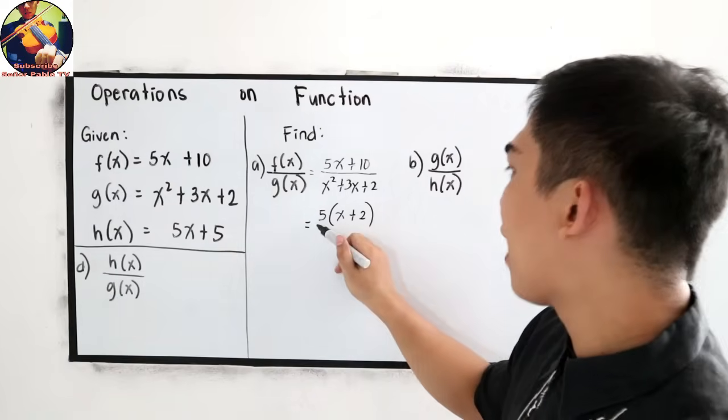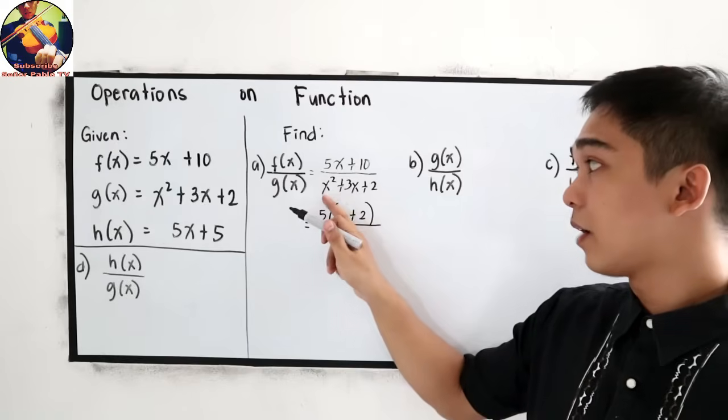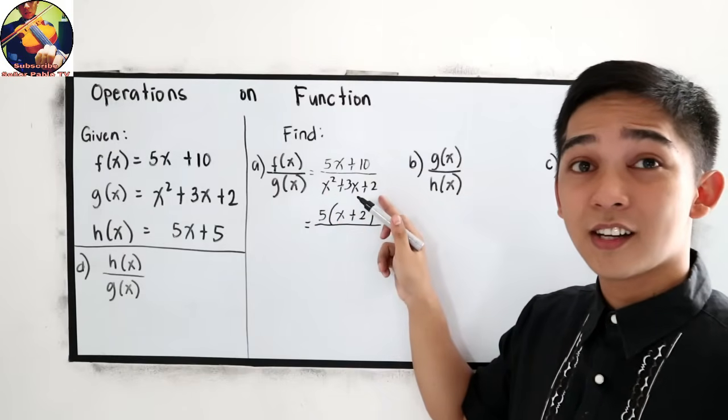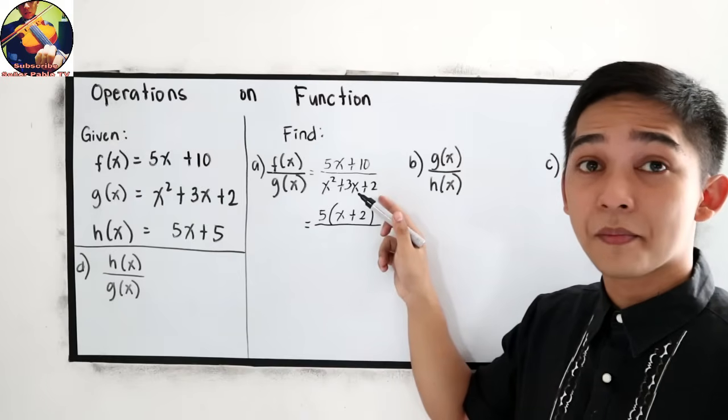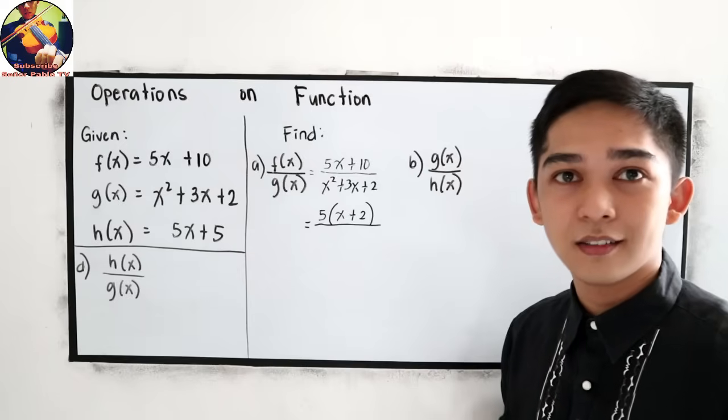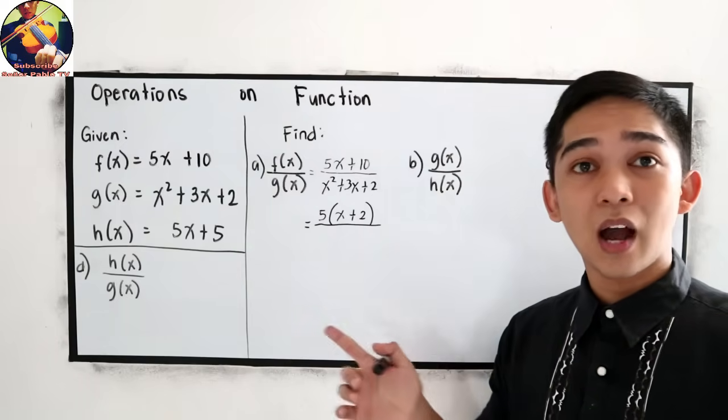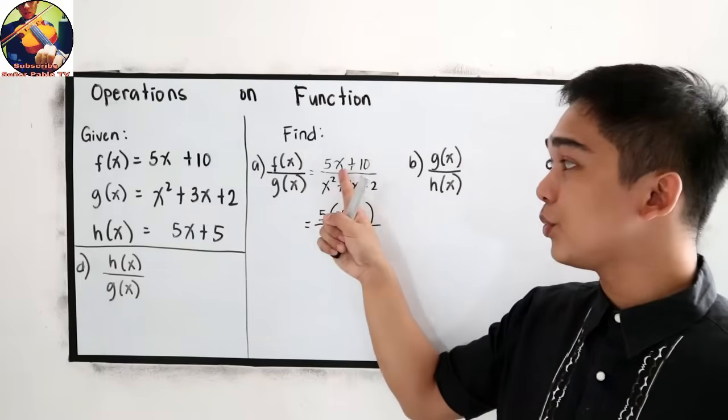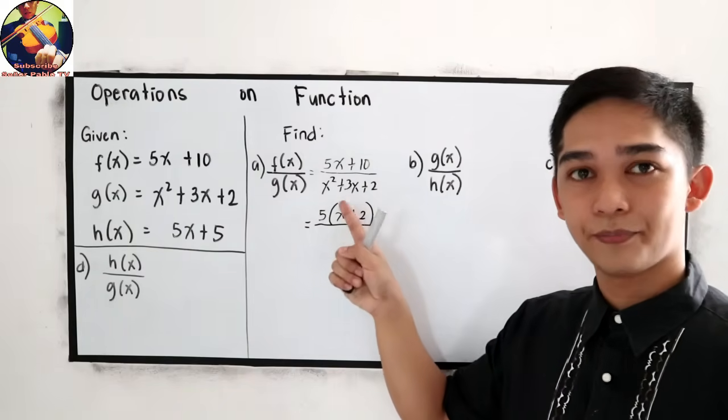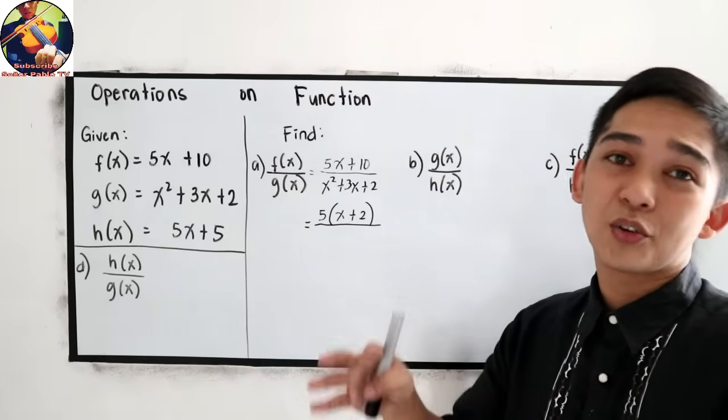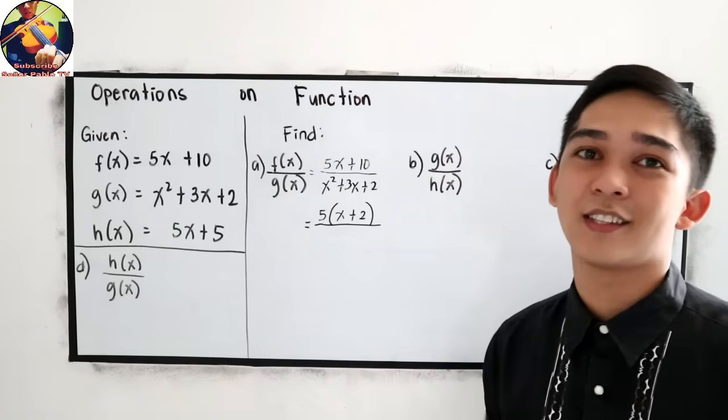Now, factor out the denominator. x squared plus 3x plus 2. This is a general trinomial in the form x squared plus bx plus c. If you want to recall factoring, you can review our grade 8 lessons. This is lesson 2 and lesson 5, or review all the factoring techniques.